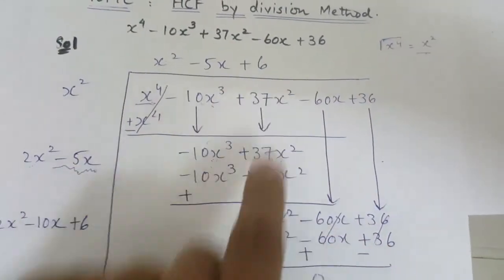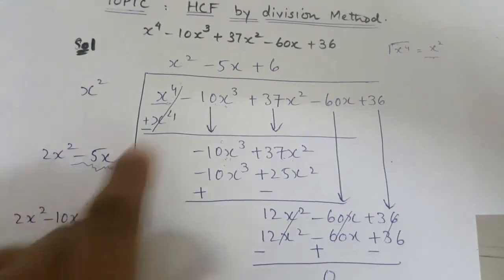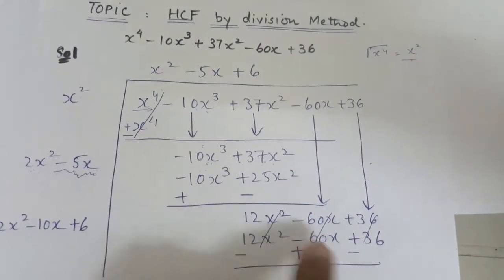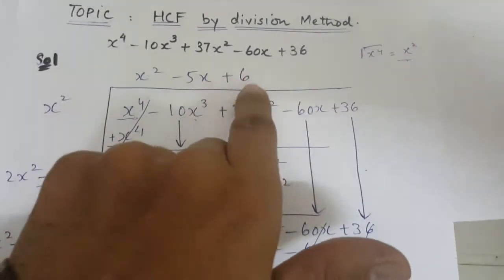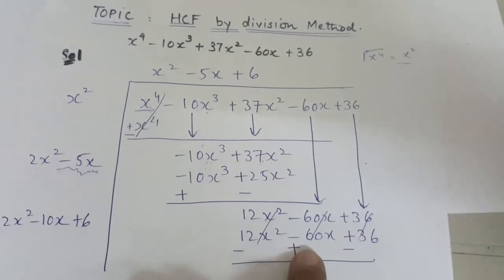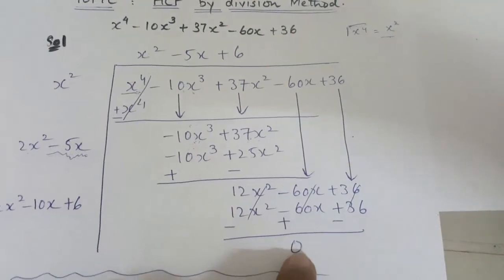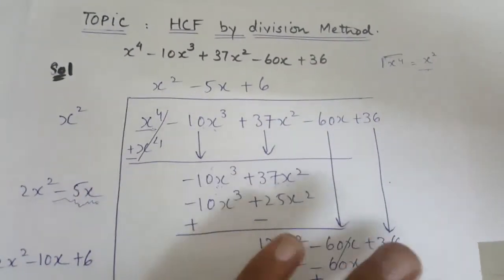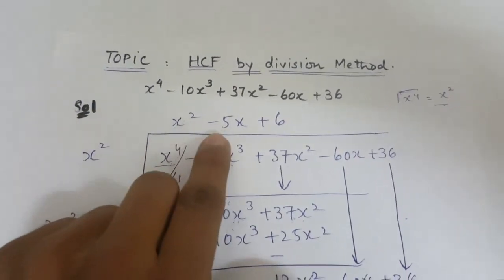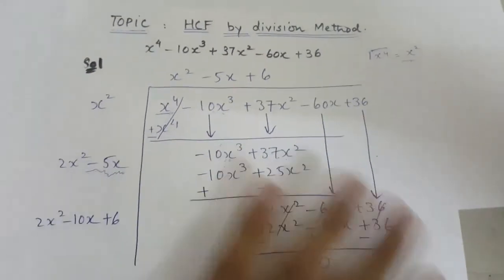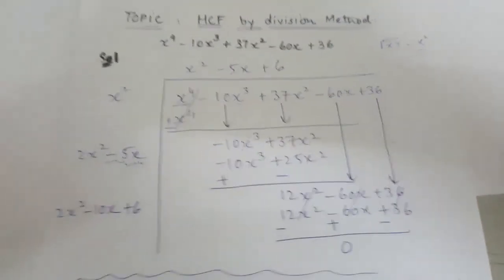Taking the products: 2x² multiplied by 6 gives 12x², -10x multiplied by 6 gives -60x, and +6 multiplied by +6 gives +36. After changing the sign, all three terms cancel out and we get zero. When we get zero, that is our final step, so the HCF is ±(x² - 5x + 6). That is how to find HCF by division method — please like and subscribe!